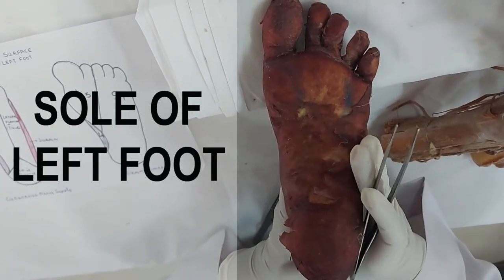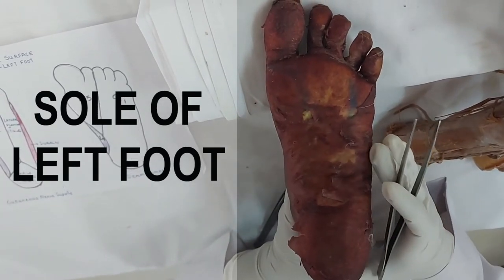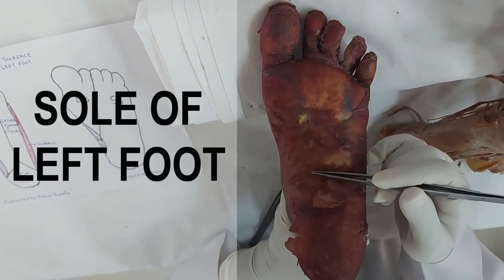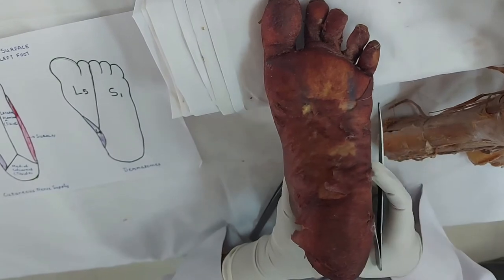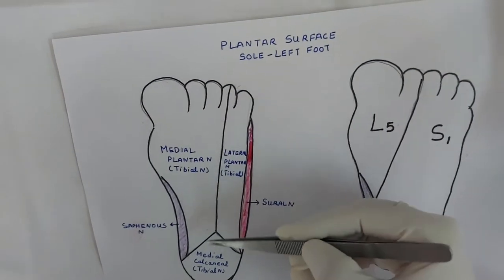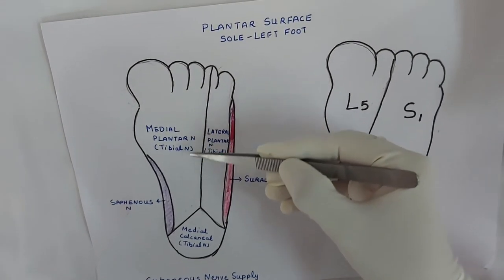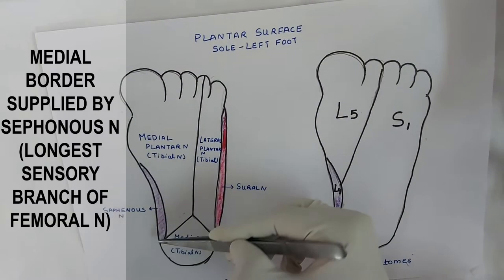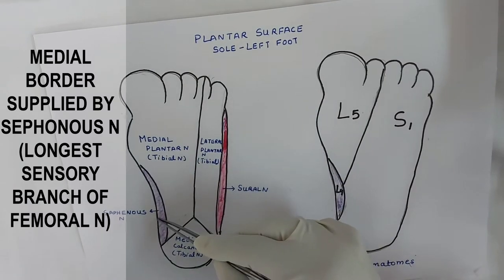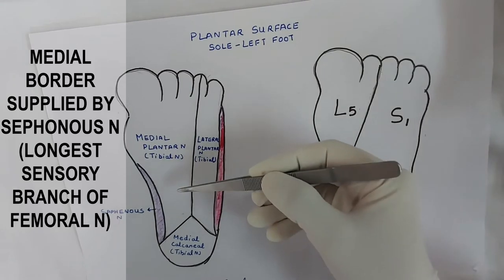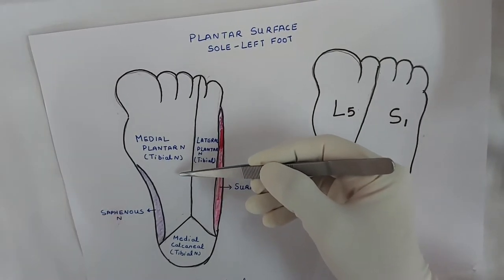We will study about the sole of the foot. We have the dissected specimens of the left lower limb. The skin over the sole of the foot is very thick. Regarding the cutaneous nerve supply over the plantar surface of the sole, we can see from this diagram that the whole of the skin over the plantar surface is supplied by various branches of the tibial nerve, except for the medial border, which is supplied by the saphenous nerve, a branch from the femoral nerve.